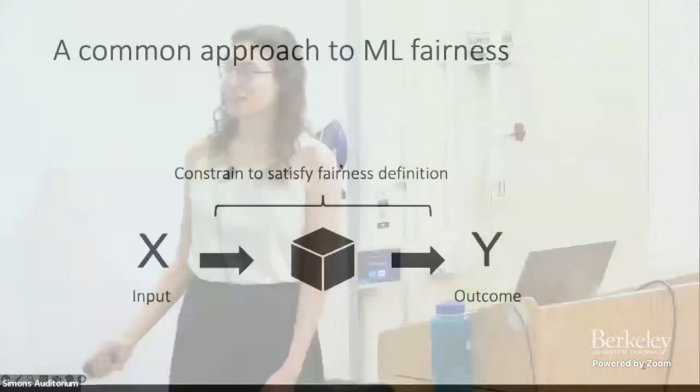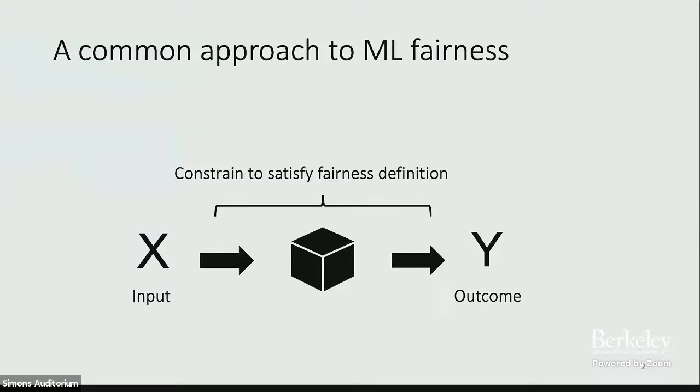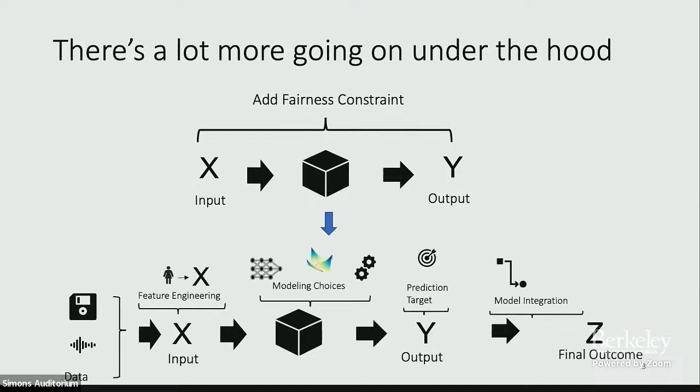A lot of us have probably seen fairness papers that go something like this: we have a model and some prediction task, we have some notion of fairness that we've defined, and we constrain a model to satisfy that fairness definition. That's wonderful — it leads to transferable solutions to fairness problems across a variety of models and application tasks. But what do we do when this doesn't work super well in practice?